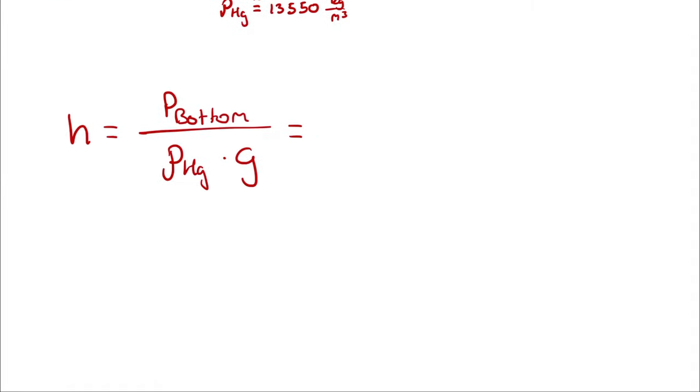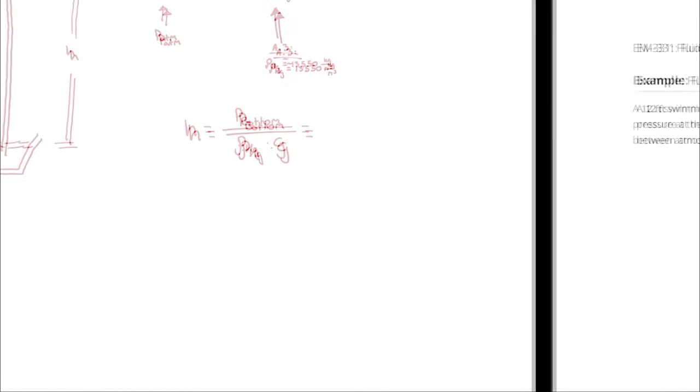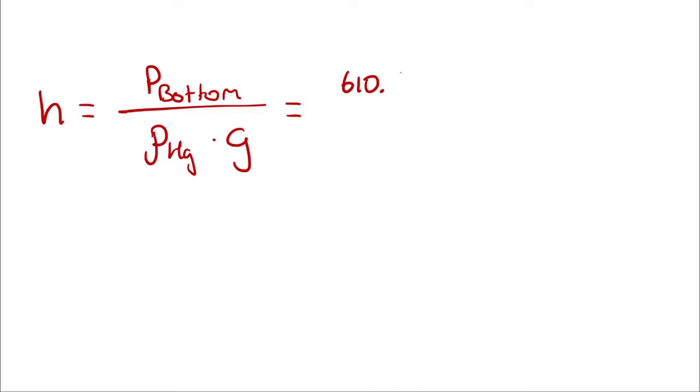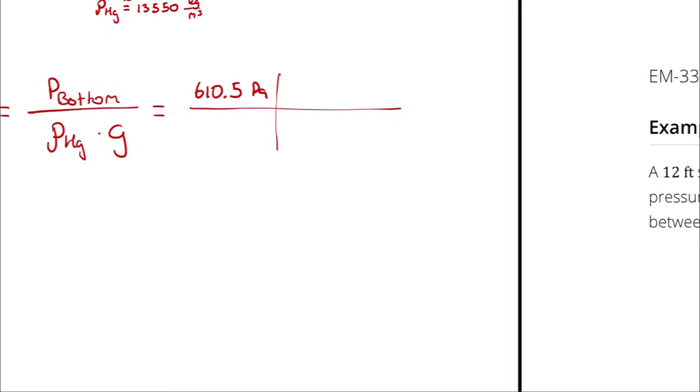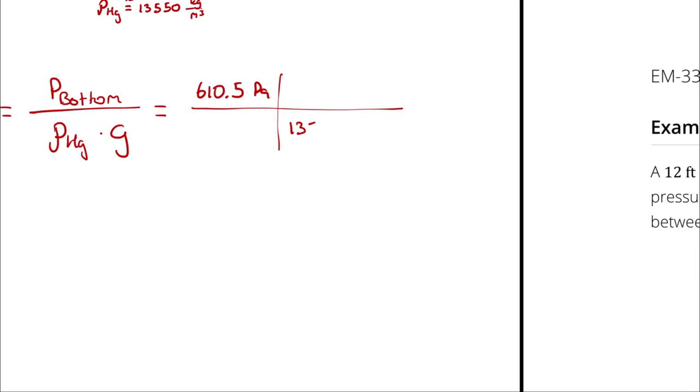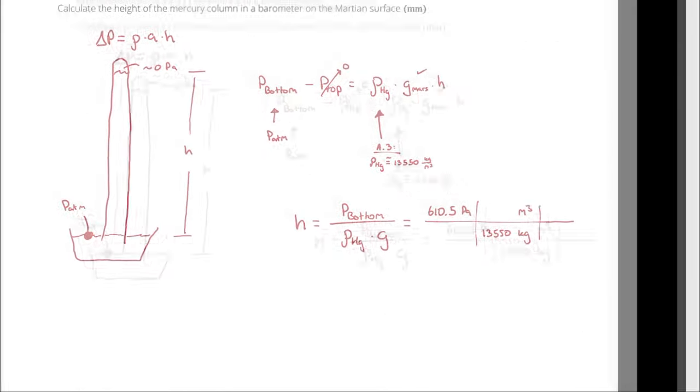P bottom is the atmospheric pressure, which is 610.5 pascals. Density we just looked up, 13,550 kilograms per cubic meter. And the gravitational acceleration on Mars, which is 3.711.